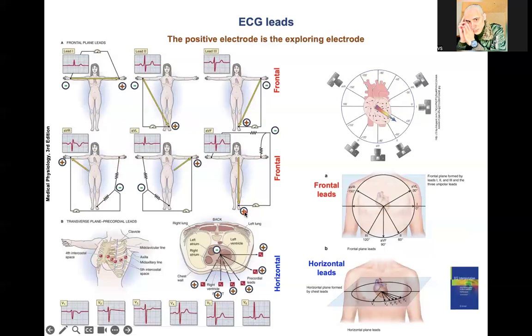Then we have the 6 horizontal leads, V1 to V6. All of them are the exploring electrodes. The negative electrode is the Wilson terminal, located in the middle of the chest.